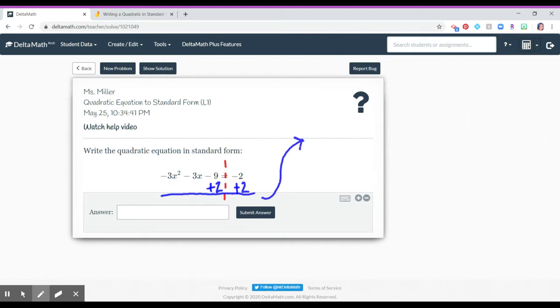So I get negative 3x squared. I'm just copying exactly what I see. Minus 3x. Negative 9 plus 2 is negative 7. Be careful with your signs. Now I have it in standard form, and I want to write it exactly how I see it.